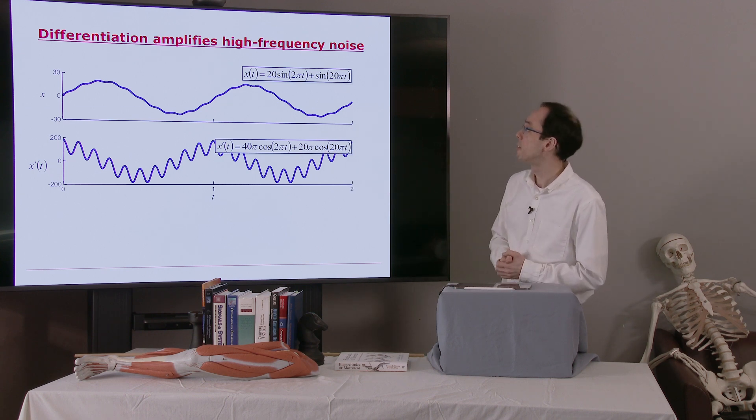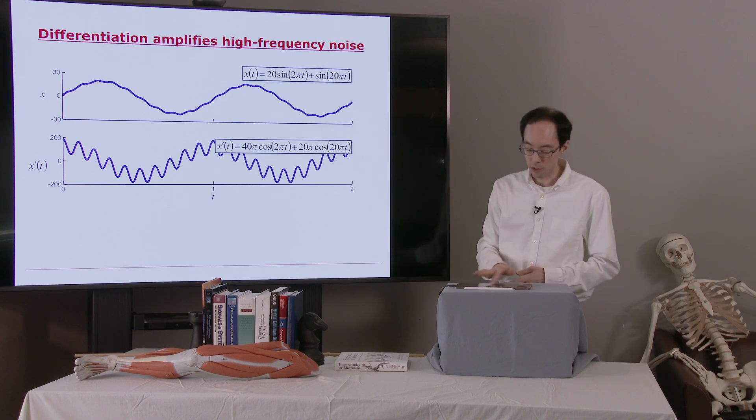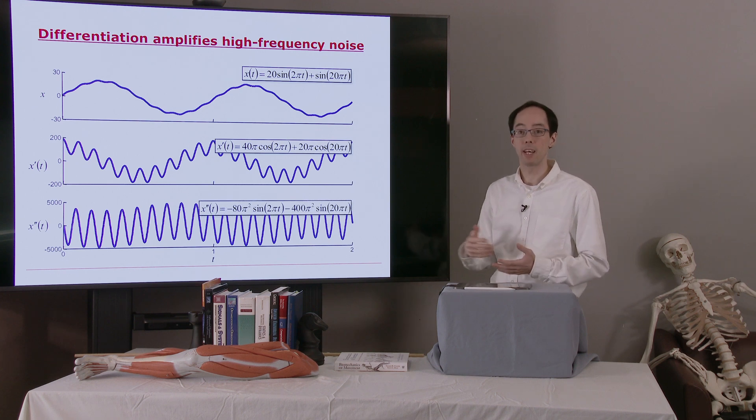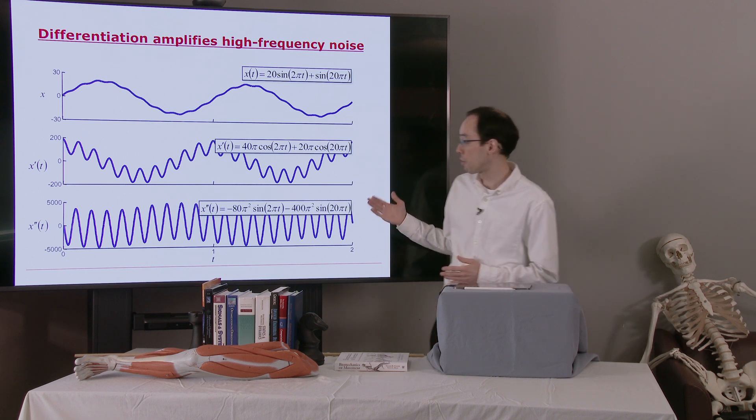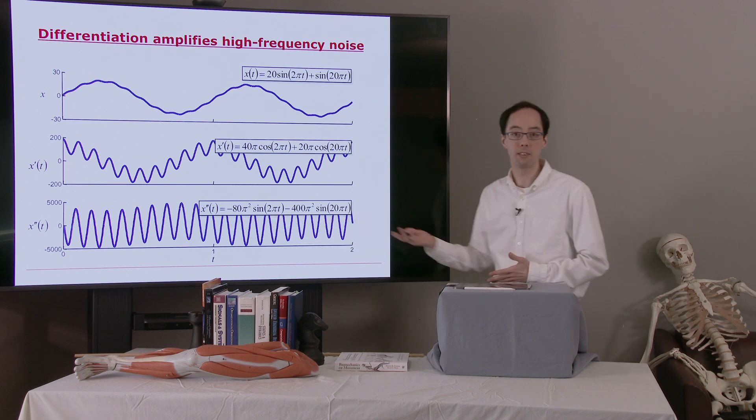If we took another derivative, suppose this was position, this would be velocity. Now if we have accelerations, the signal to noise ratio drops again. So now we have a signal to noise ratio of only 0.2. And you'll see that the noise is actually dominating the signal.